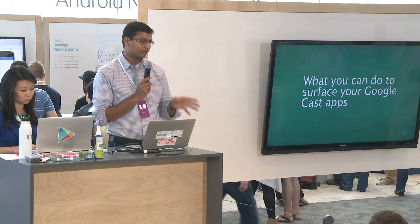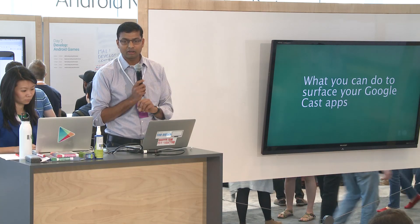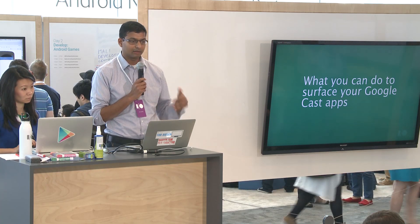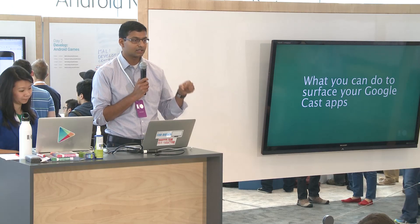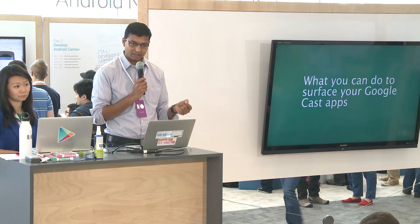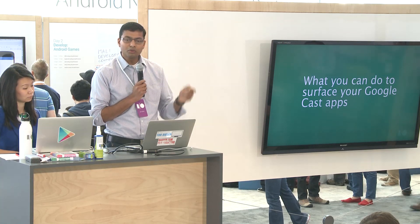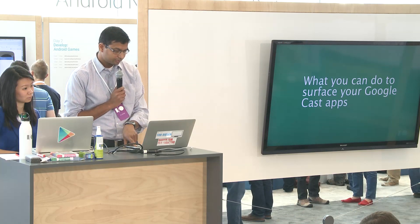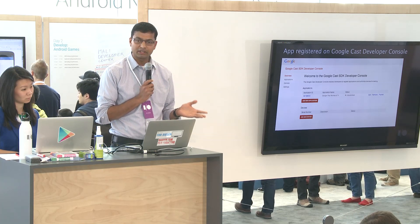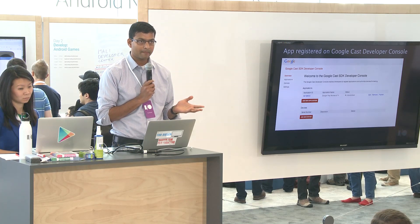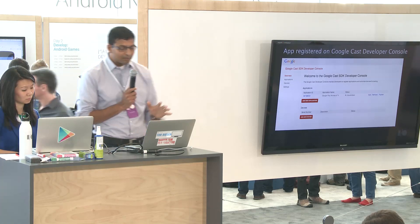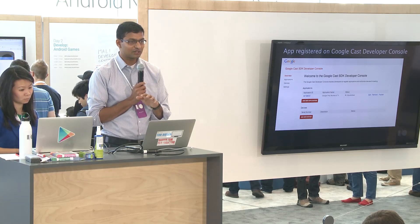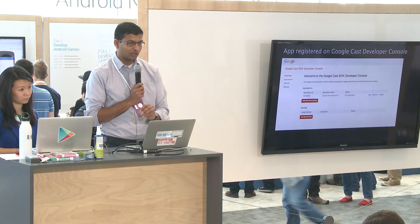We gave you a quick overview — also announced at the keynote yesterday — of what we are doing to make apps discoverable. We're continuing to work on that, and you'll see in the coming weeks and months that this gets more interesting. Now I want to talk about what you can do to make these apps more discoverable and help us surface your apps better. If you've already published an app on the Cast developer console, I want you to go back there as quickly as you can and enter the information we're going to talk about next.